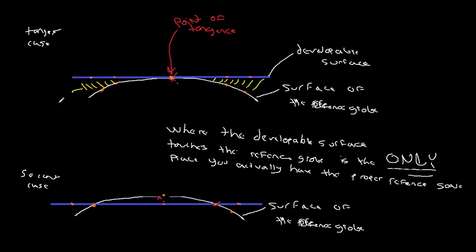With a single point of tangency in the tangent case, the farther away you go from the tangent line or point of tangency, the more your scale is going to be exaggerated. The points on the developable surface are actually farther apart than they should be at the reference scale. The farther away you are from the point of tangency, the worse the error gets.